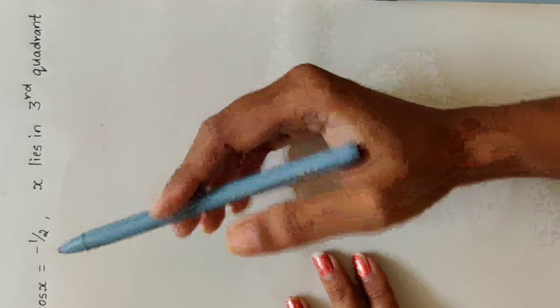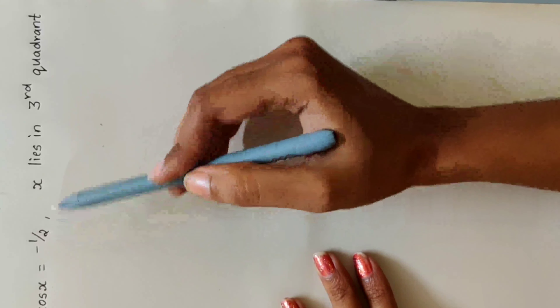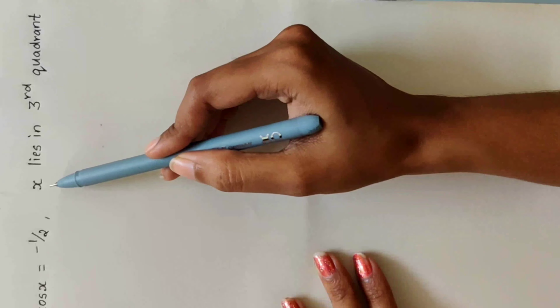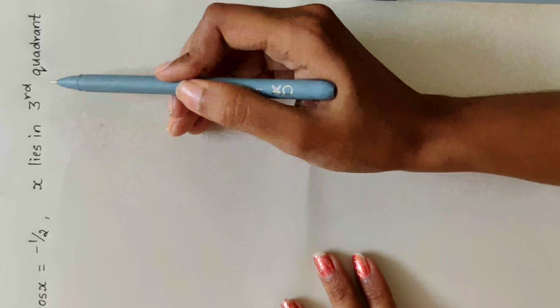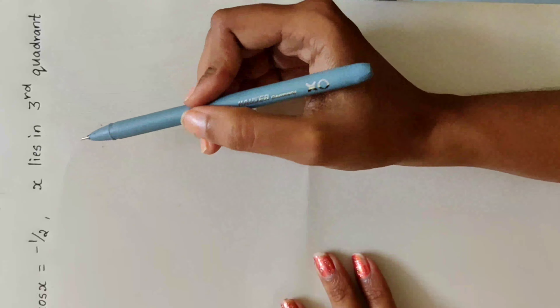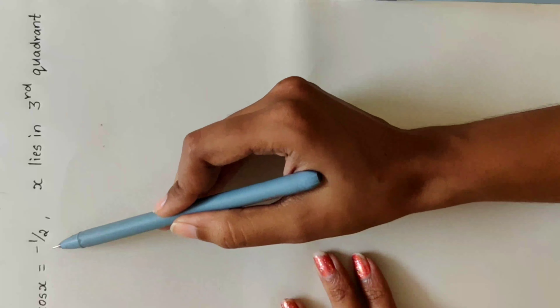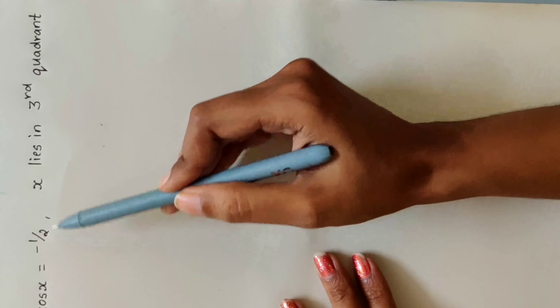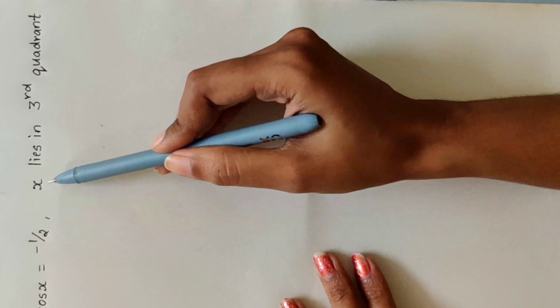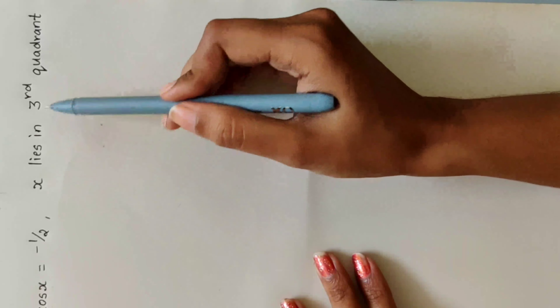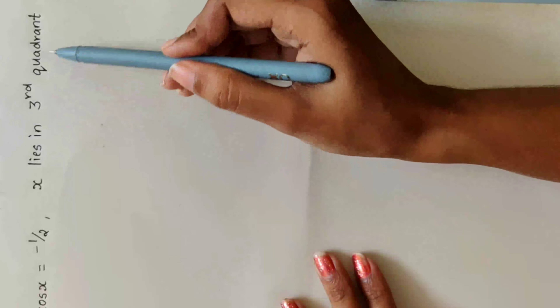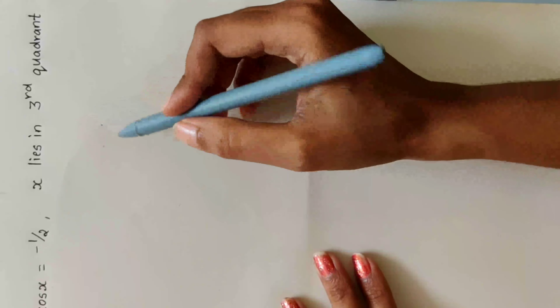In this question, cos x value is given as minus 1 by 2, and they have given that x lies in the third quadrant. The cos x value is already given as minus 1 by 2, and x lies in the third quadrant.